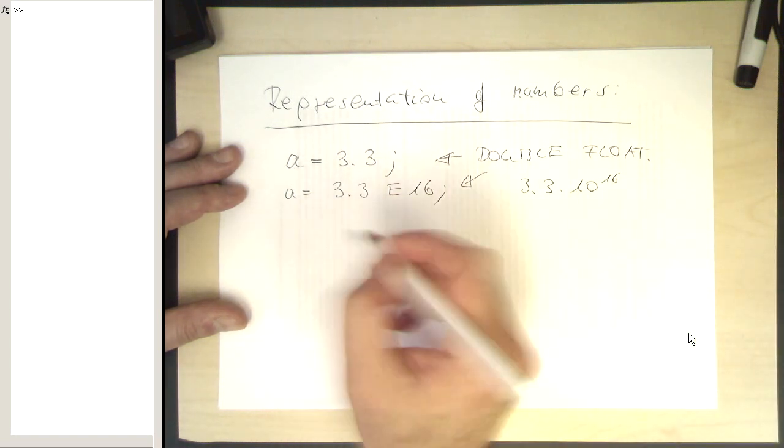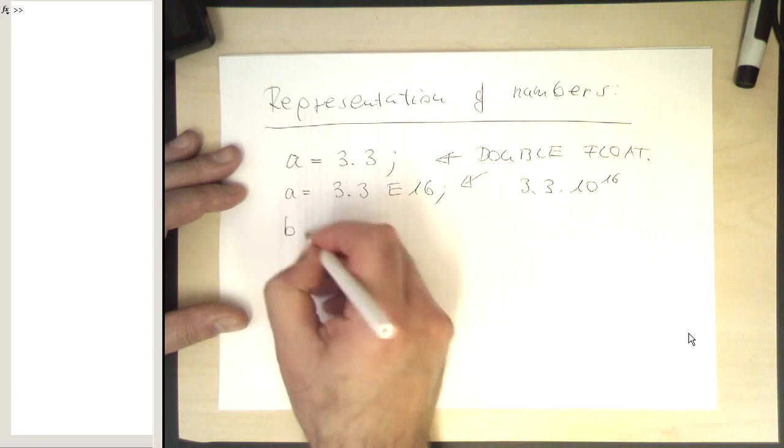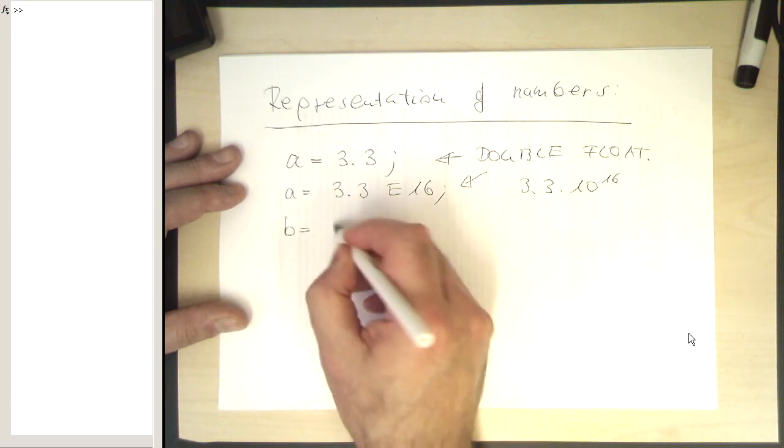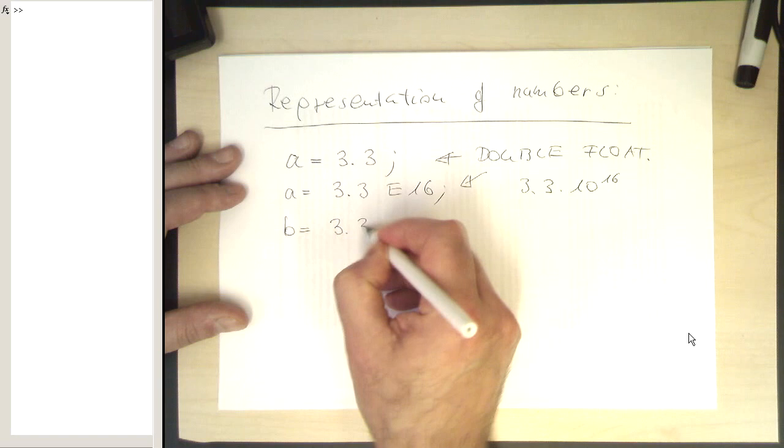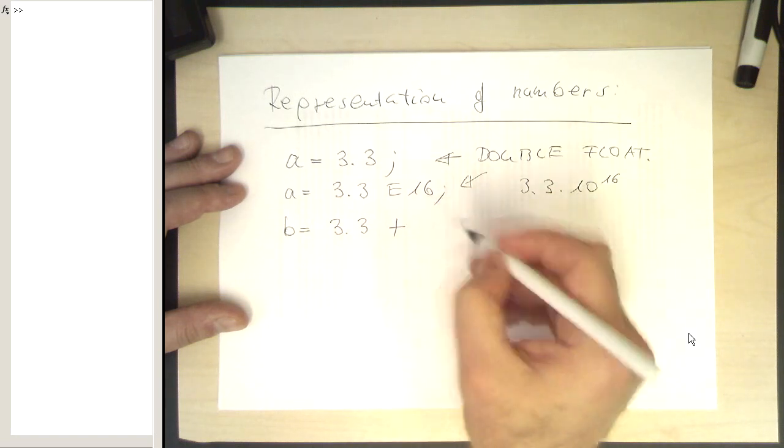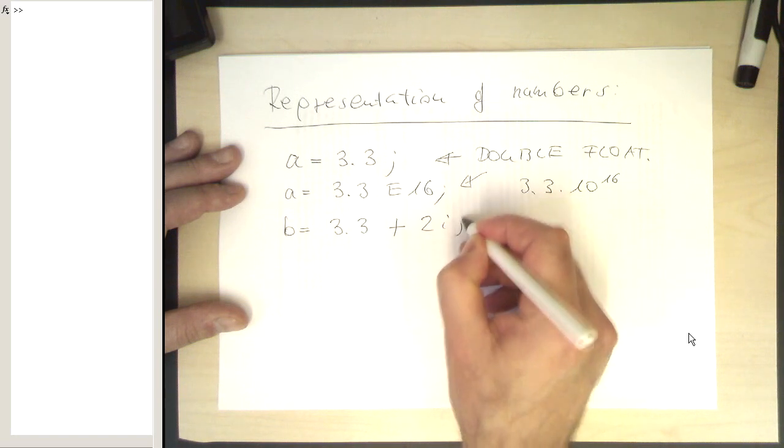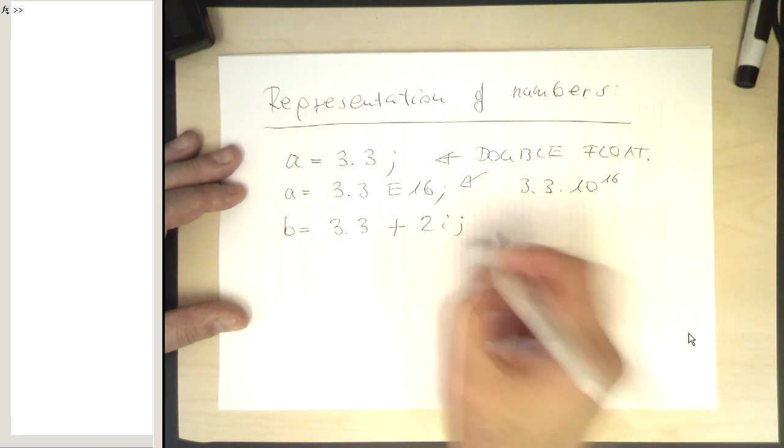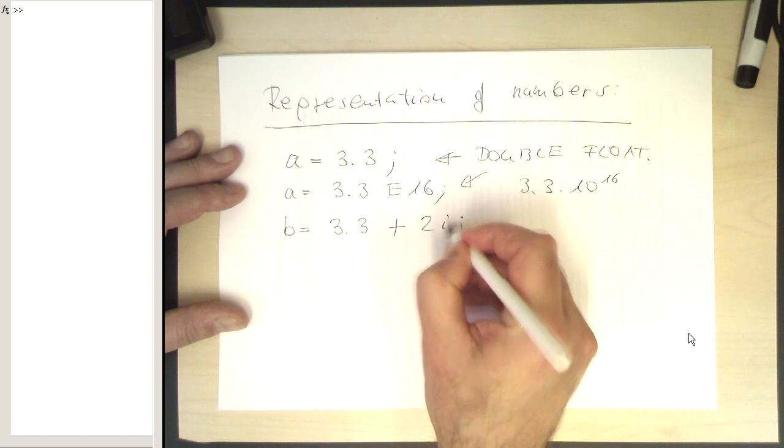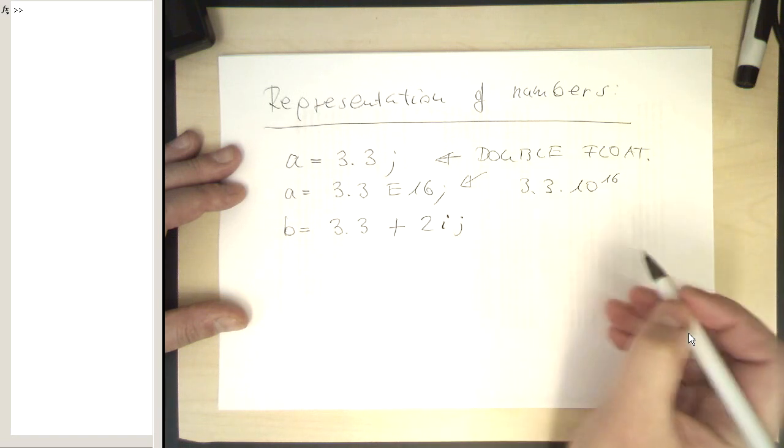What is special in MATLAB is that we can also create complex numbers. We can write 3.3 plus, and then creating a complex number, for example, like 2i semicolon. It looks a bit like a j here, but this is an i. So we have 2i.